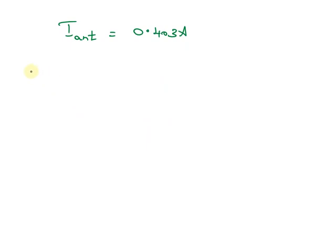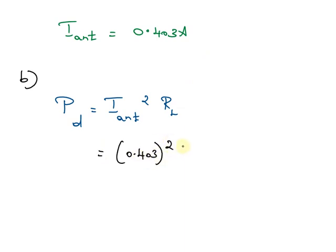we are going to find out the power dissipated by the antenna by using the formula PD equals current squared into RL. Now, we can substitute the values: 0.403 whole square into 0.625.